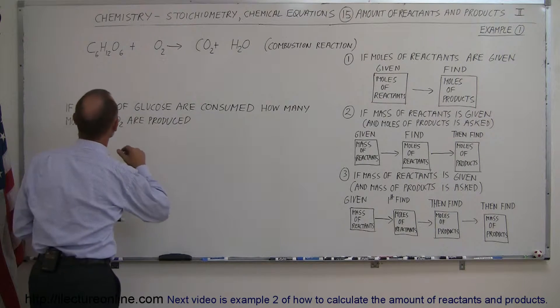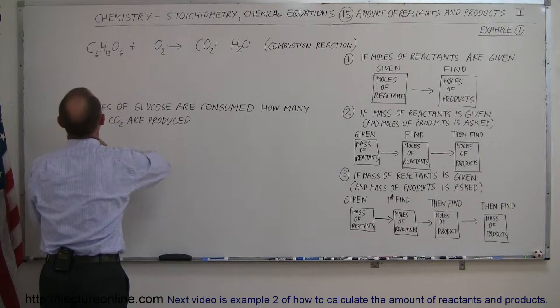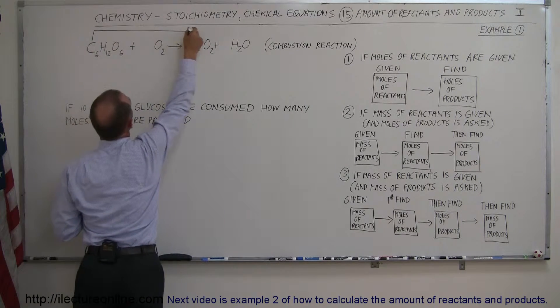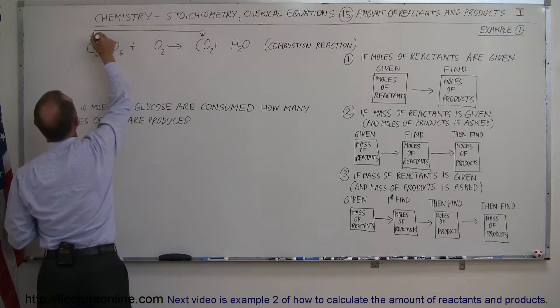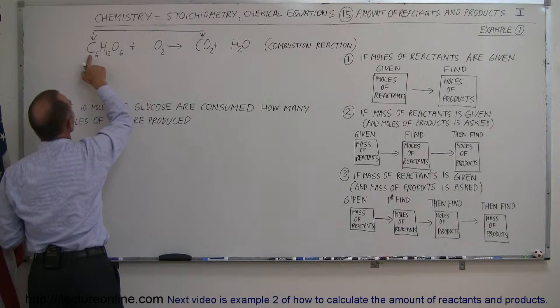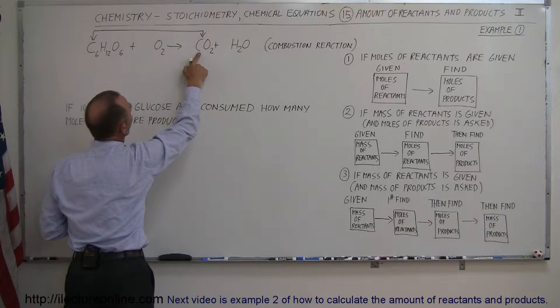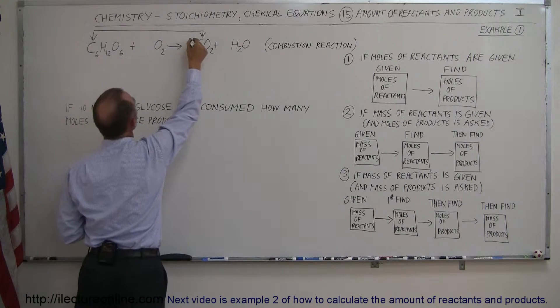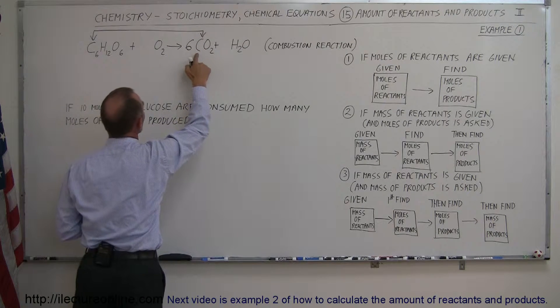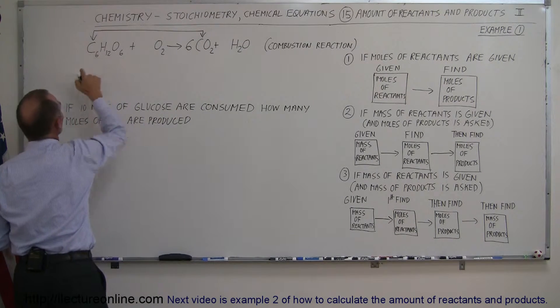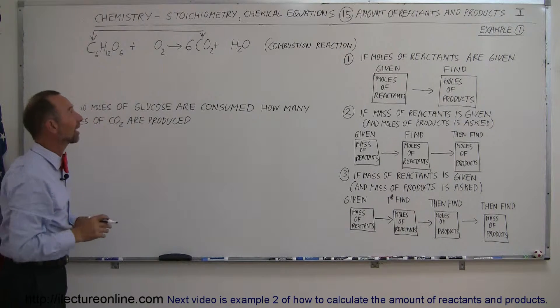Starting out with this equation, maybe we'll start with carbon. Notice that we have six carbons in this molecule and there's only one carbon over here. So to balance the carbon we're going to need to put a six over here. So now we have six carbons on the right side of the equation and six carbons on the left side of the equation.